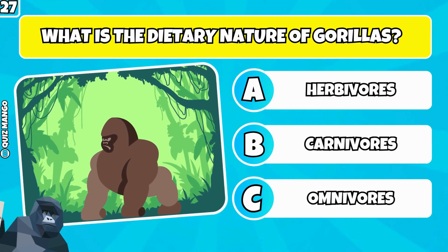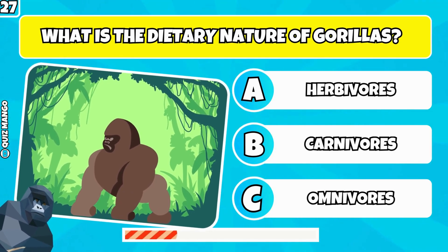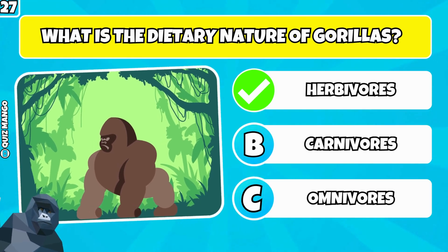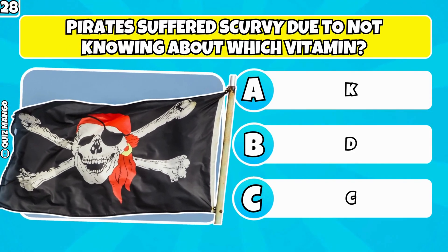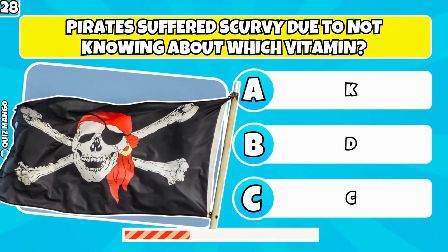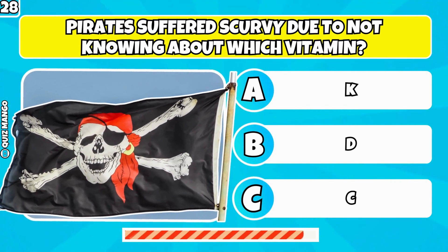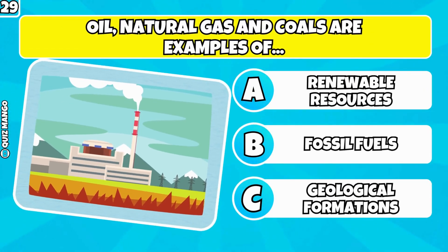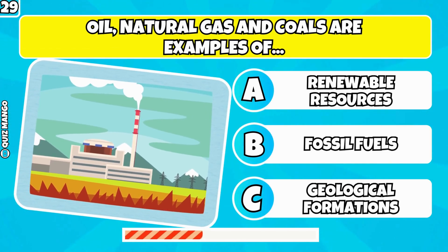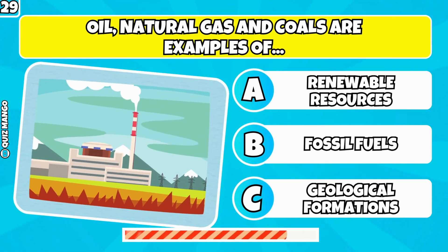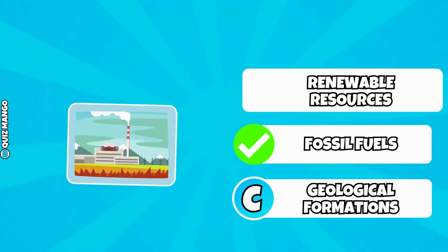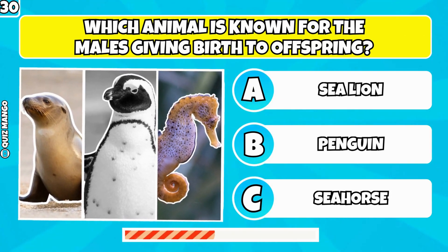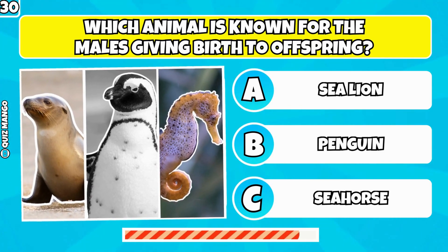What is the dietary nature of gorillas? Herbivores. Pirates suffered scurvy due to not knowing about which vitamin? It was vitamin C. Oil, natural gas, and coal are examples of what? These are fossil fuels. Which animal is known for the males giving birth to offspring? The seahorse.